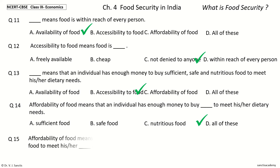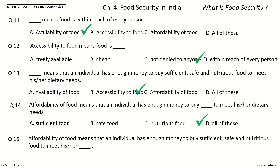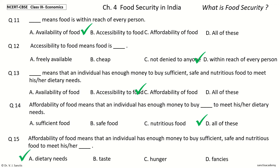Question 15: Affordability of food means that an individual has enough money to buy sufficient, safe, and nutritious food to meet his or her dash. The options are: dietary needs, taste, hunger, fancies. Your time to choose. And the answer is dietary needs. So affordability of food means that an individual has enough money to buy sufficient, safe, and nutritious food to meet his or her dietary needs.